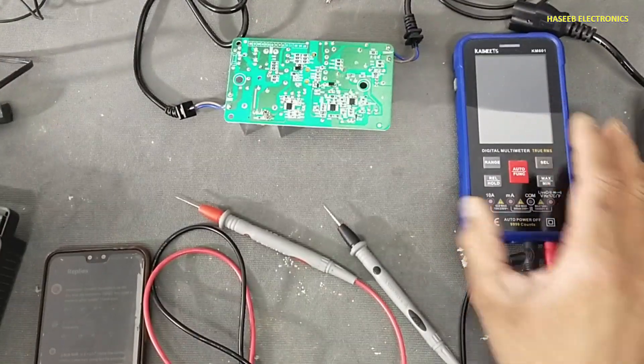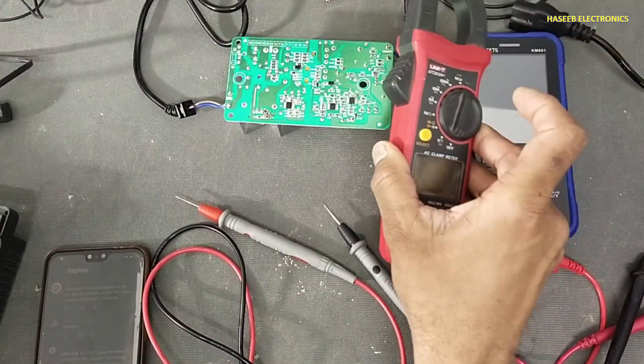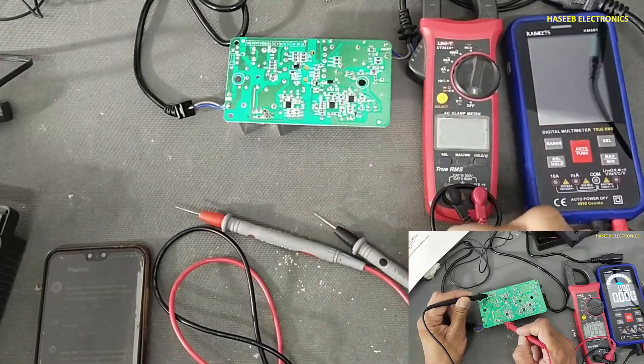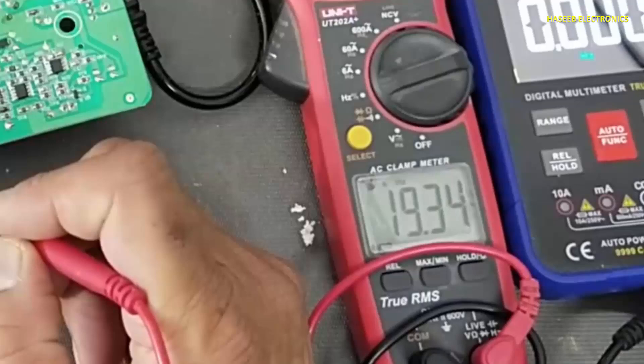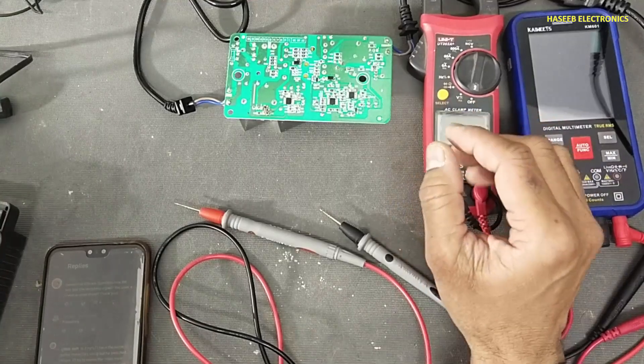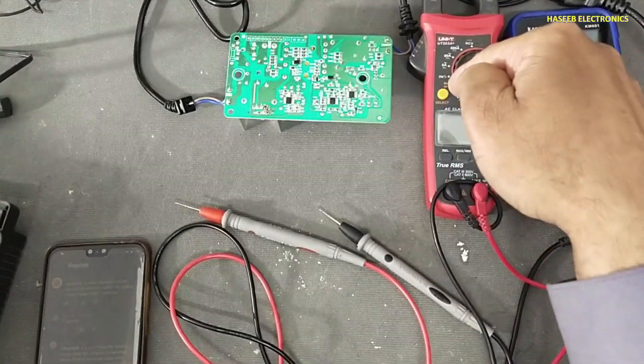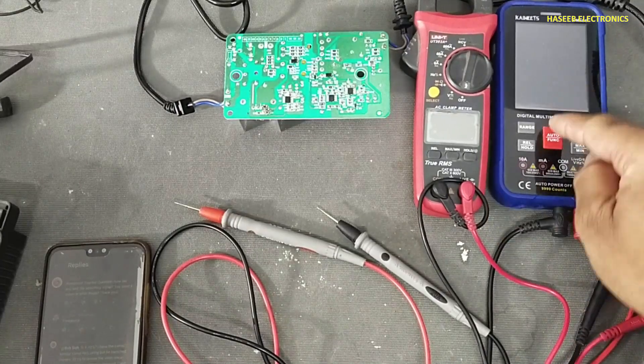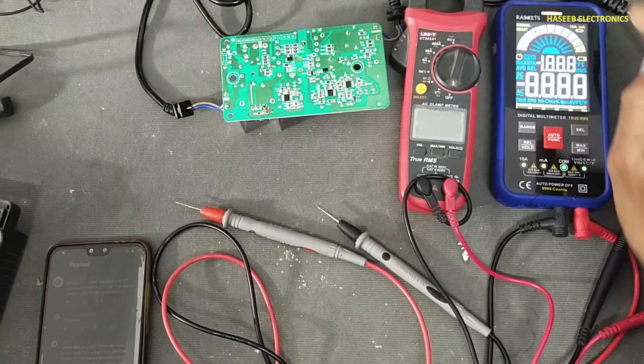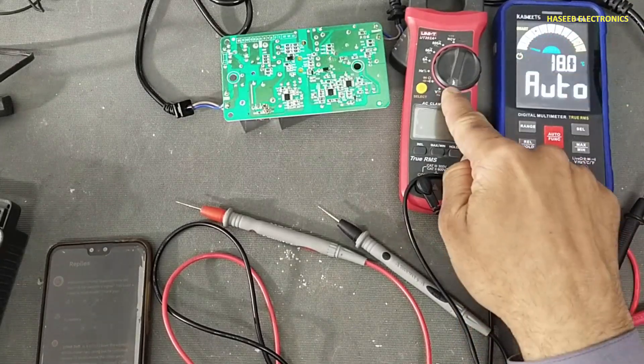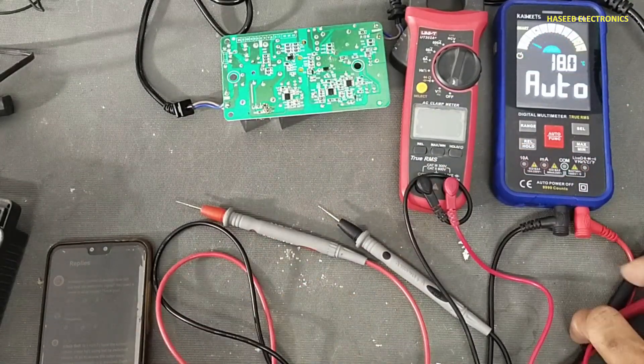While testing, I switched to this multimeter to measure the frequency and I made about 19.34 kilohertz. This multimeter also has the frequency function here, but I prefer this one. Why? Let's see.